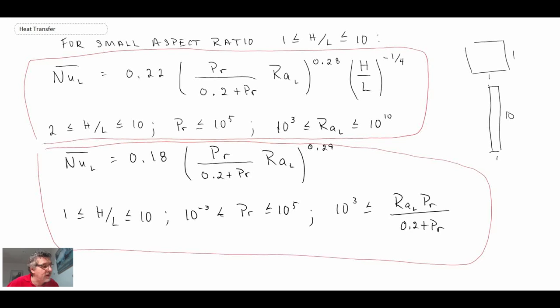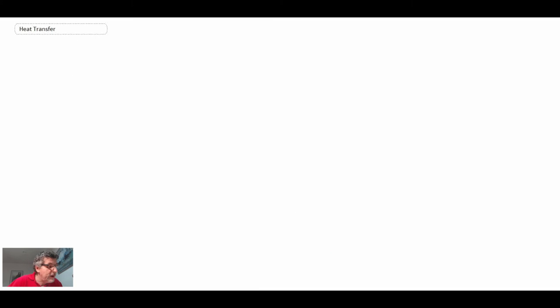So those are the equations that you can use to calculate the convective heat transfer coefficient for an enclosed vertical space where you have a cavity. Now if you have larger aspect ratios, like you might have in the case of a double pane window, the correlations are a little different.